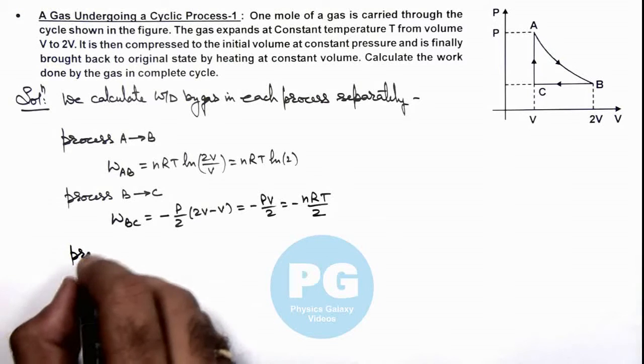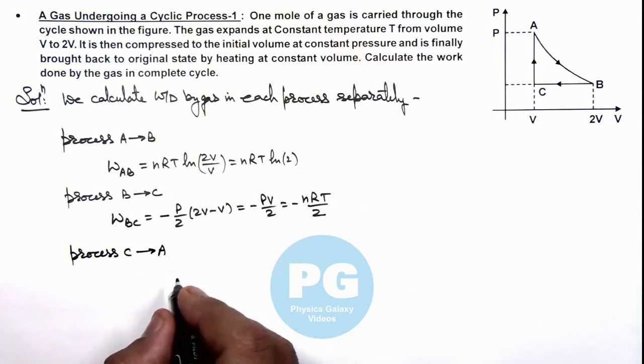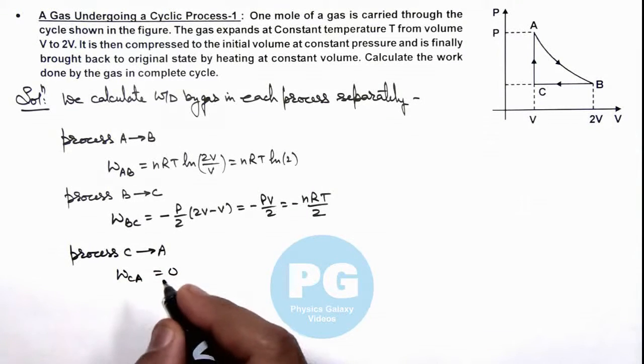For process C to A, this is an isochoric process, so the work done can be directly written as zero.